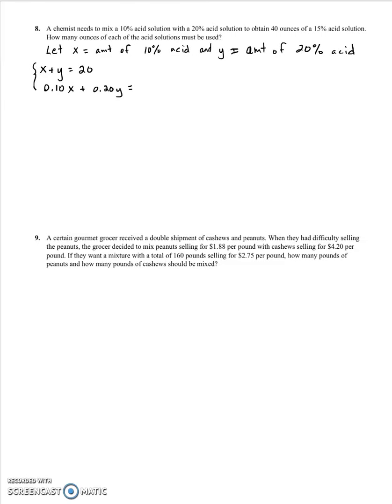And I made a mistake, we have 40 total ounces, not 20. So our first equation should be X plus Y equals 40, not X plus Y equals 20. Anyway, that 40 ounces we get when we're done should be 15% acid. So its amount of acid is 0.15 times 40.